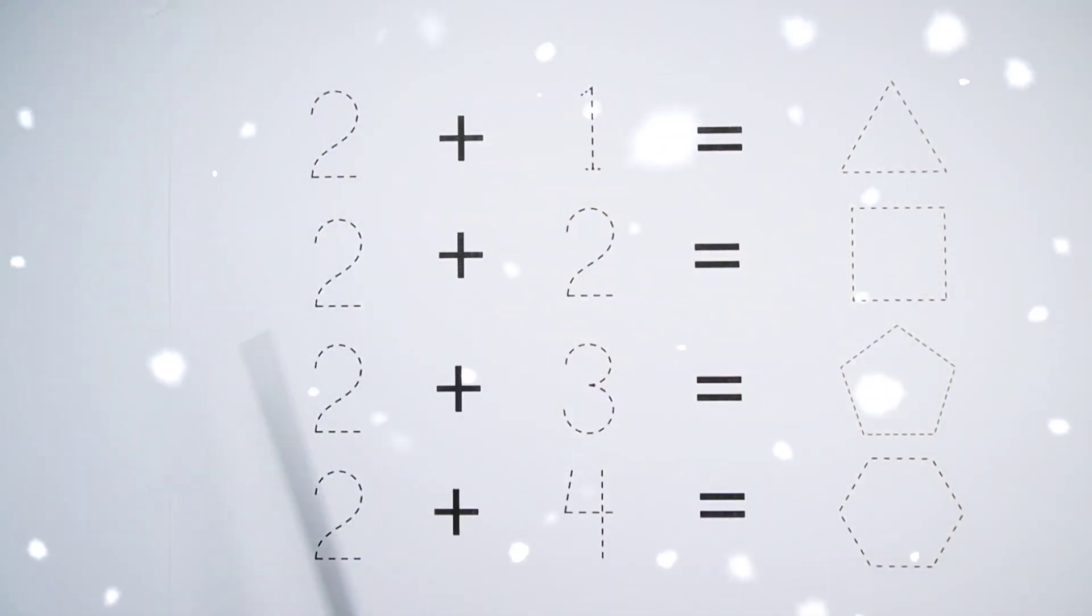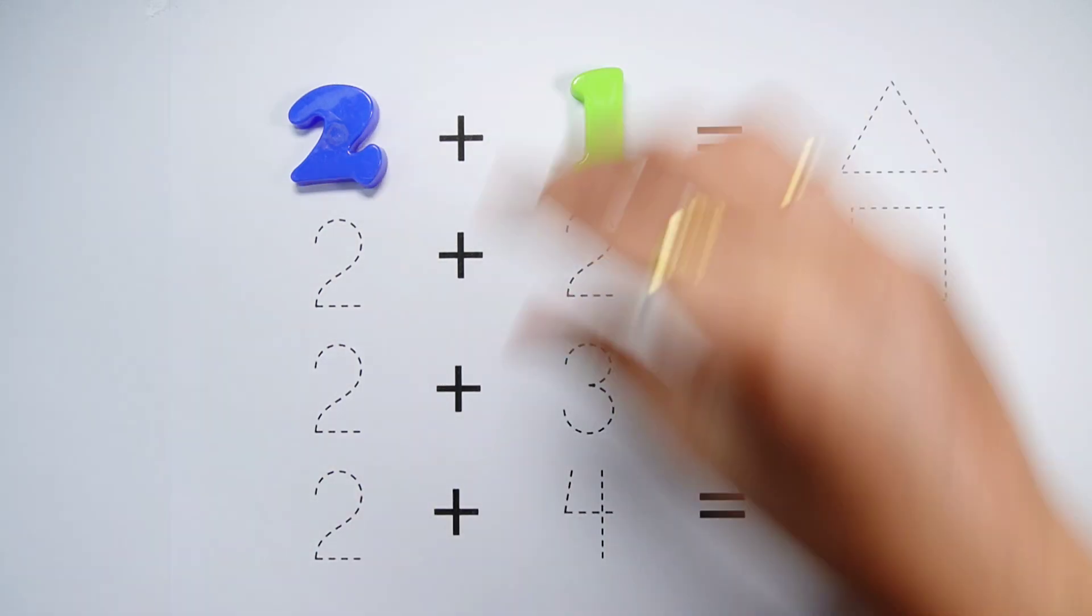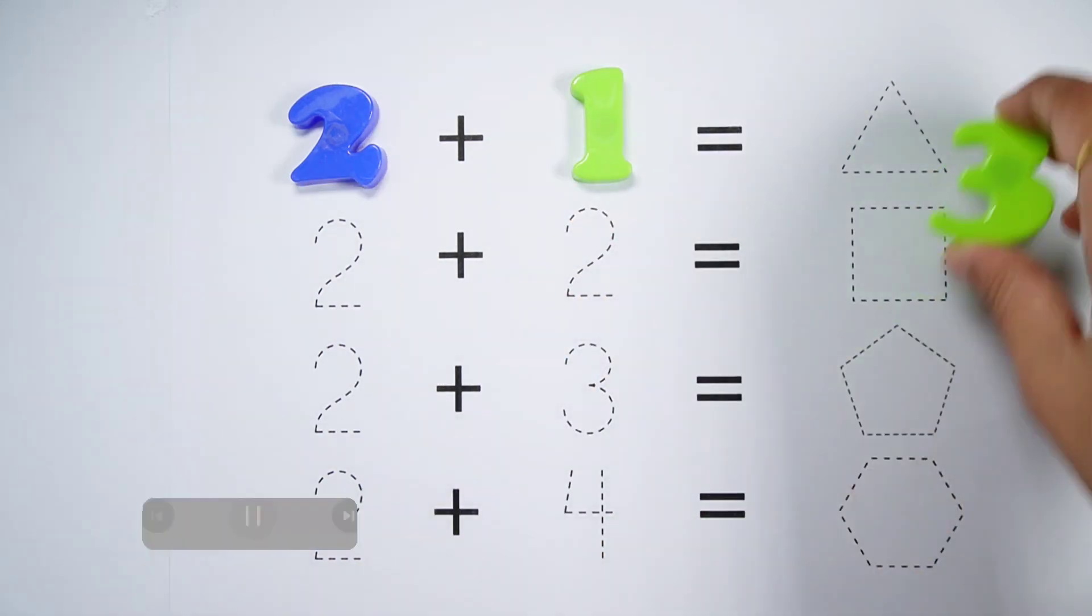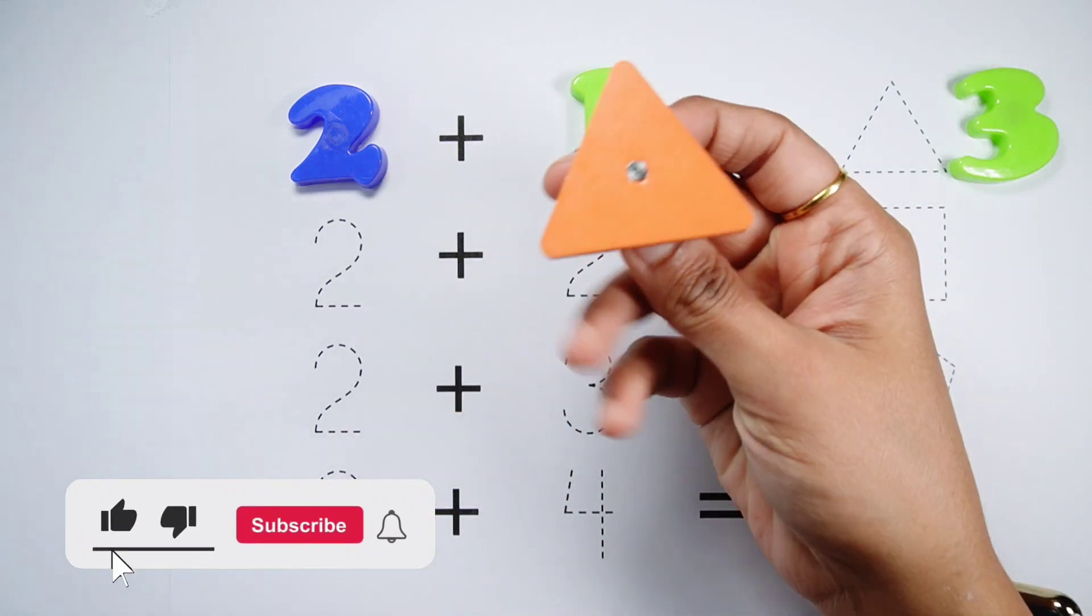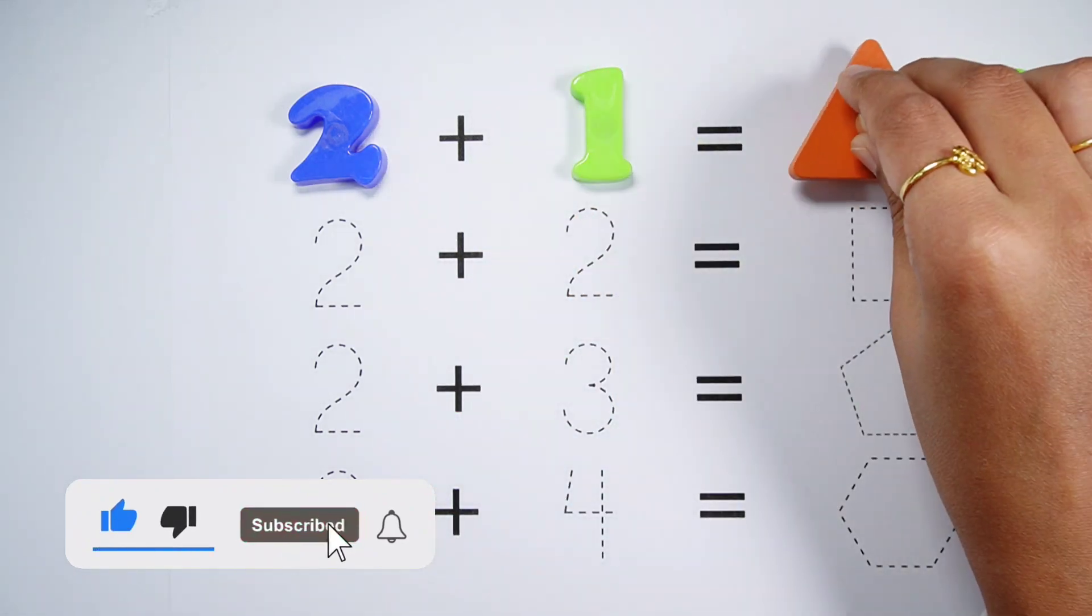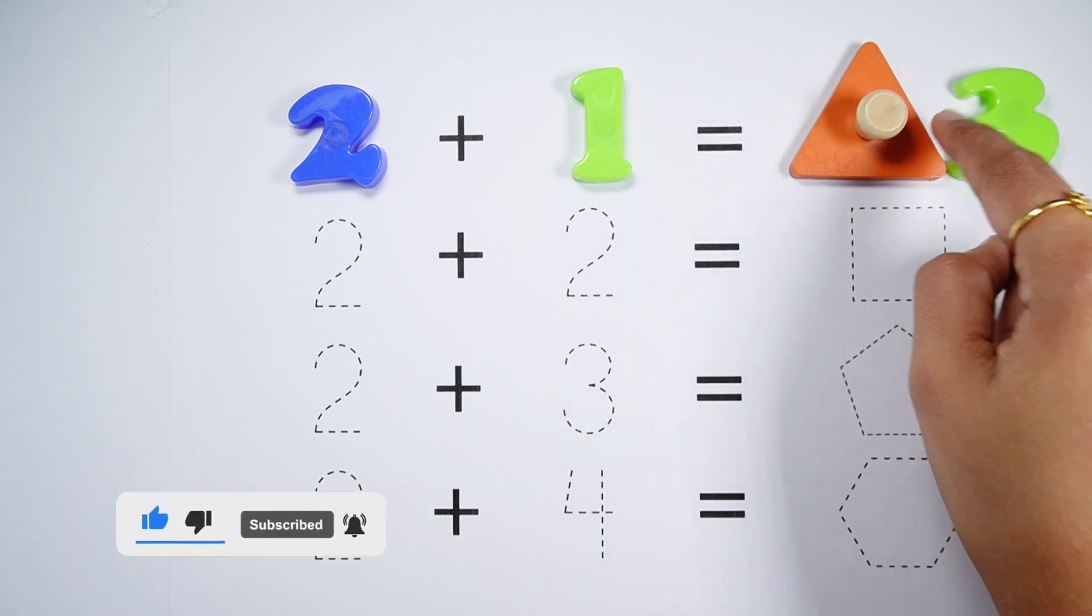Hello kids, let's learn some addition. 2 plus 1 equals 3. A triangle. A triangle has three sides: 1, 2, 3.